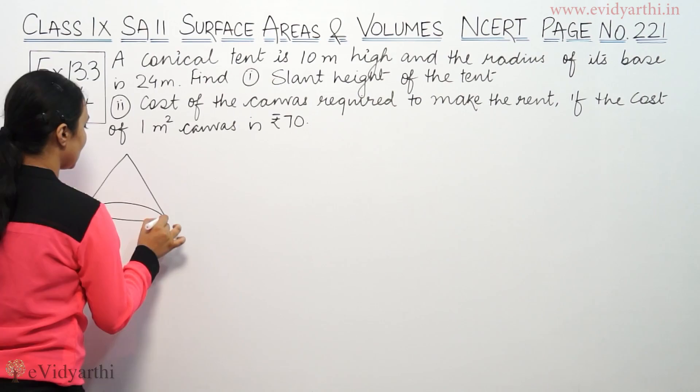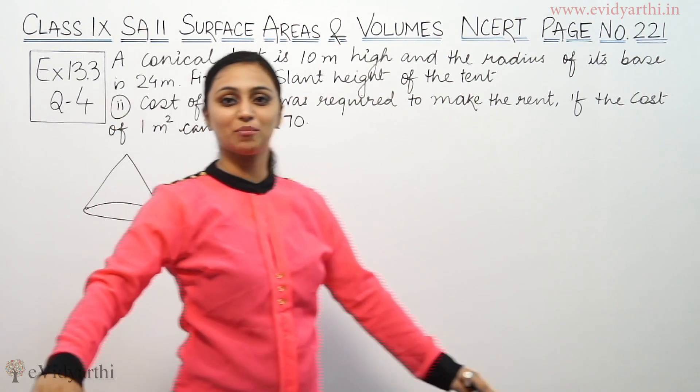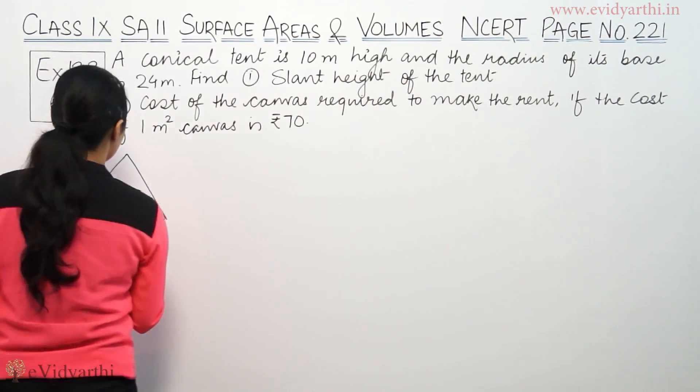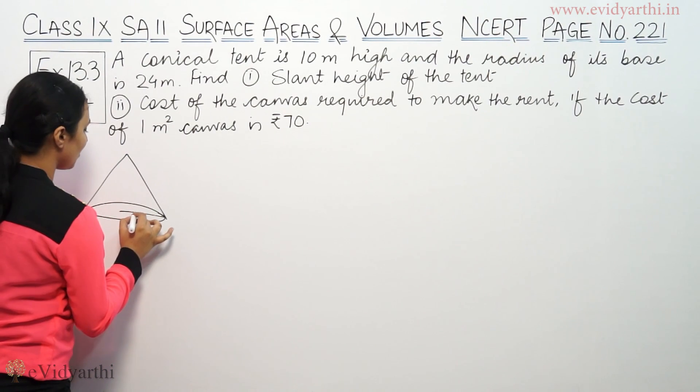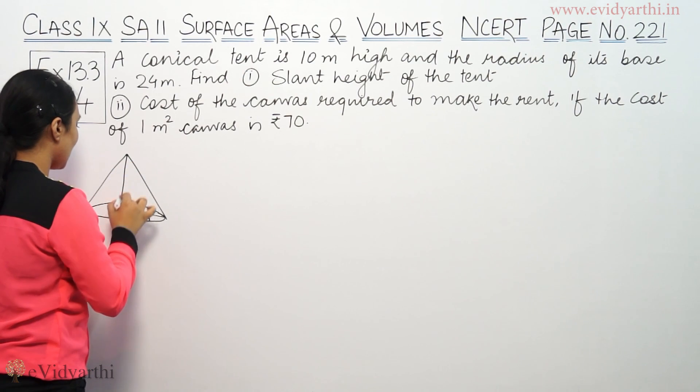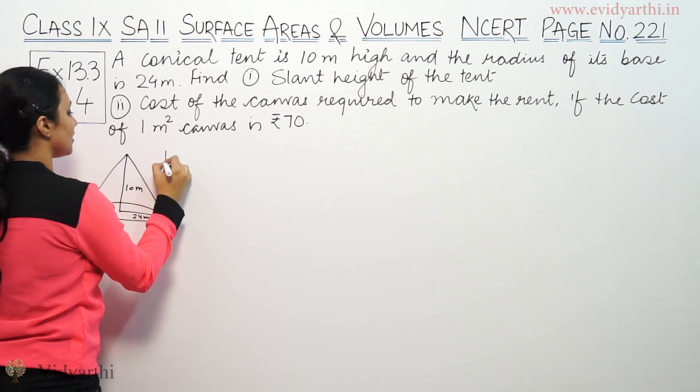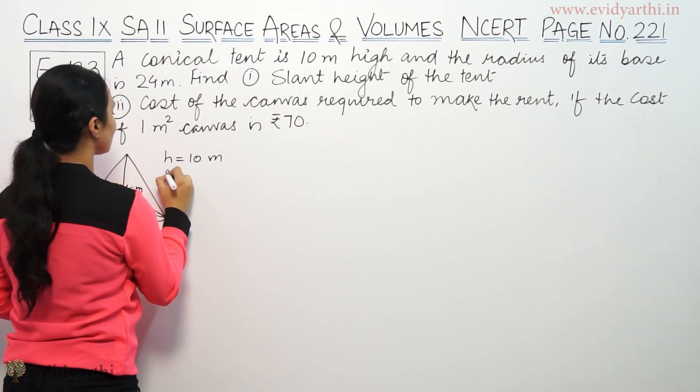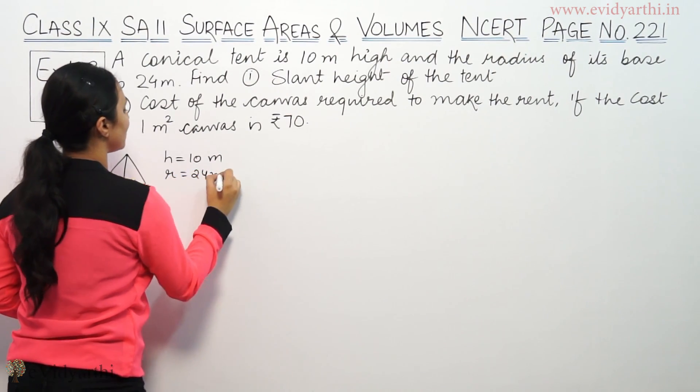Drawing the conical tent: the radius of base is 24 meters and the height is 10 meters. So we have height equals 10 meters and radius of base equals 24 meters.